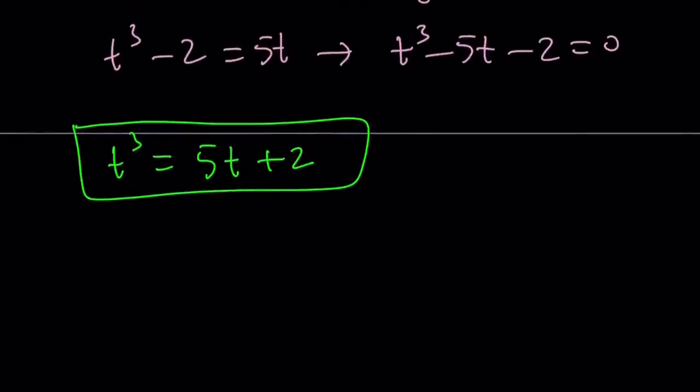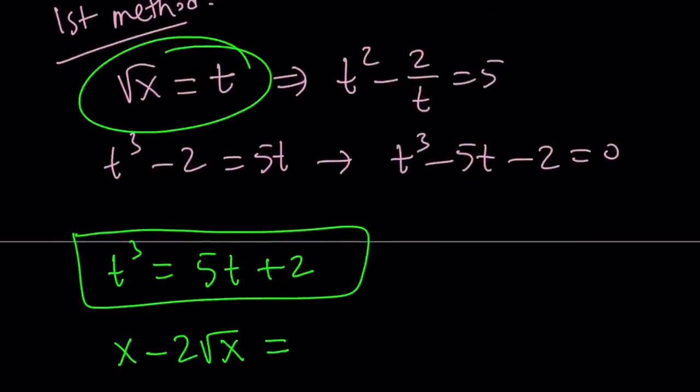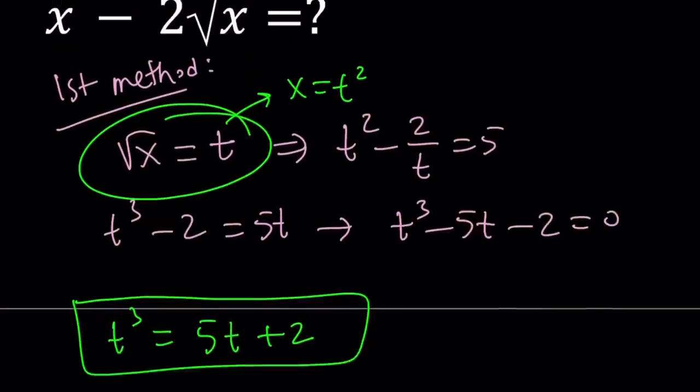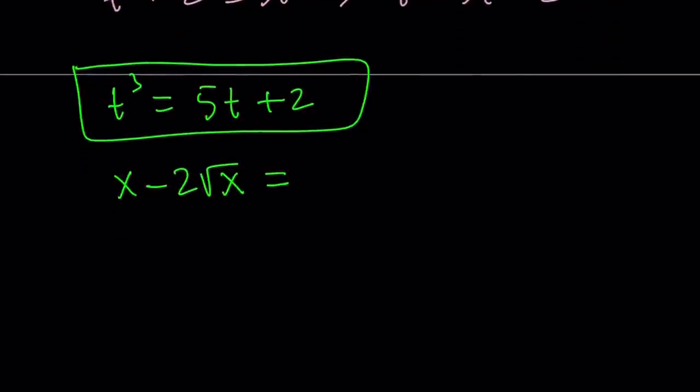I was able to write t cubed as this. So what am I looking for? What am I trying to find? Well, x minus 2 times the square root of x is what I'm looking for, but since square root of x is equal to t, that means x is equal to t squared. So, I need to replace x with t squared, that gives me t squared minus 2t. That's what I'm trying to find. I have this and I need to find that. Can we do it? Absolutely.